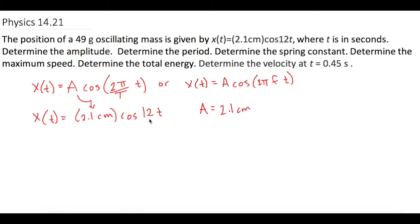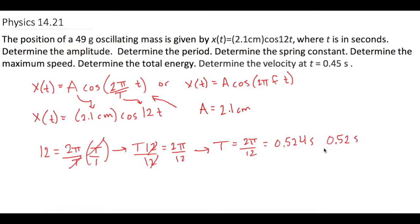So all they're really doing with this question is they just want to check that you understand what's going on with these two equations. So a is 2.1 centimeters. And then they say, what is the period? So we're going to use this version right here to solve for t. So they just give us 12 though. So what they're saying is 12 is equal to 2 pi over t. So now we solve for t times both sides that. Then we get t times 12 is equal to 2 pi. And then we divide both sides by 12. And we're left with t is equal to 2 pi over 12. So that gives us t of 0.524 seconds, or rounded, we'll just do 0.52 seconds equals t.